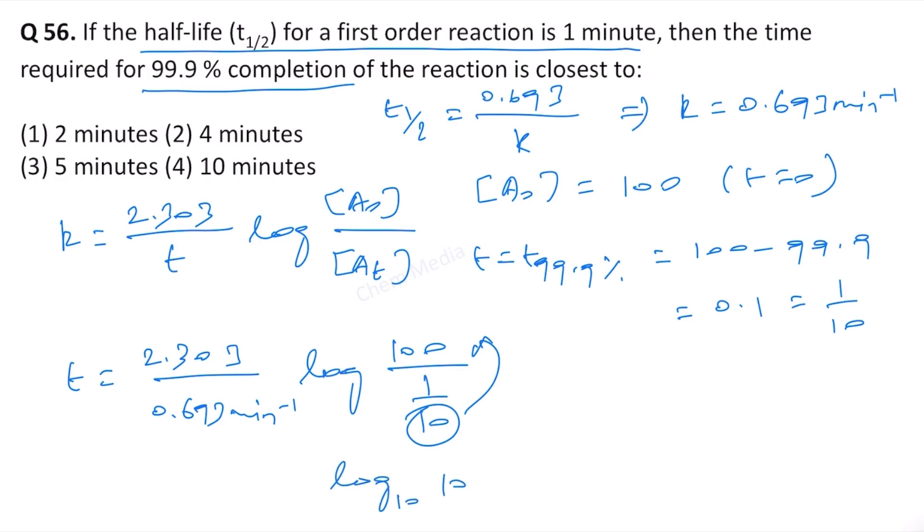So if we do that, then 3 times 2.303, that will be 6.909 divided by 0.693.